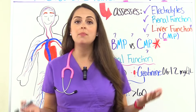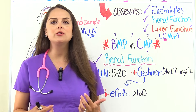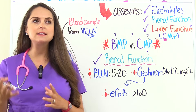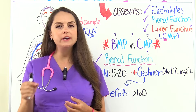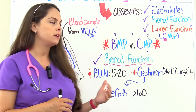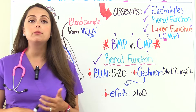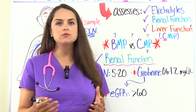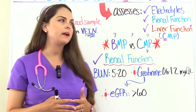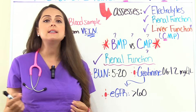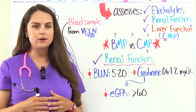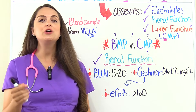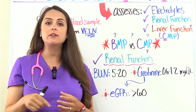Now let's look at the renal function part of the metabolic panel. It's going to look at two important things: the BUN and creatinine. These two lab values go together in helping us interpret how well the kidneys are working, and we're really concerned about high values. BUN measures the amount of urea nitrogen in the blood, and a normal range is anywhere between 5 to 20. If this is really high, it's telling us the kidneys are stressed out. A normal creatinine level should be anywhere between 0.6 to 1.2 milligrams per deciliter — notice this range is very small.